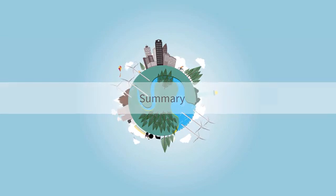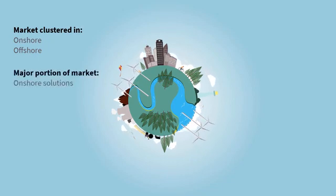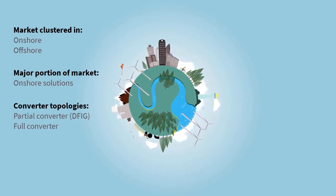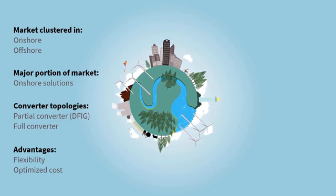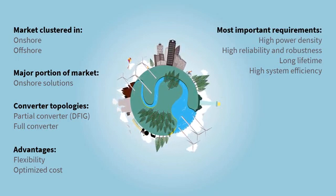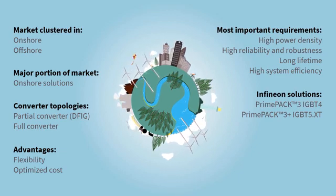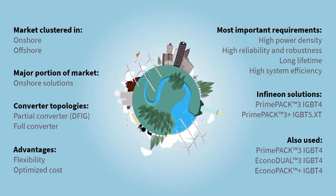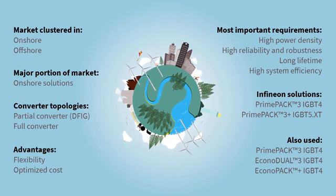Let's now sum up. The market can be clustered in on and offshore solutions. Onshore business represents the majority of the overall wind market. There are two important wind turbine topologies: partial converters DFIG and full converters. These technologies are preferred due to their flexibility and optimized cost of wind turbines. The most important requirements of wind power converters are high power density, high reliability and robustness, long lifetime, as well as high system efficiency. Infineon's prime pack solutions meet all wind power converter requirements. Besides IGBT 5.XT prime pack, Infineon's IGBT 4 chip based modules such as prime pack 3, econodule 3, and econopac plus are also used in wind power converters.